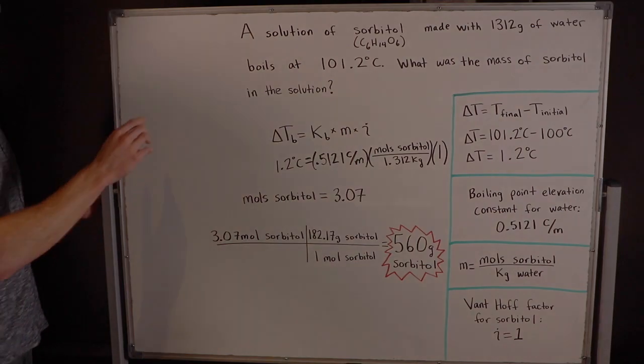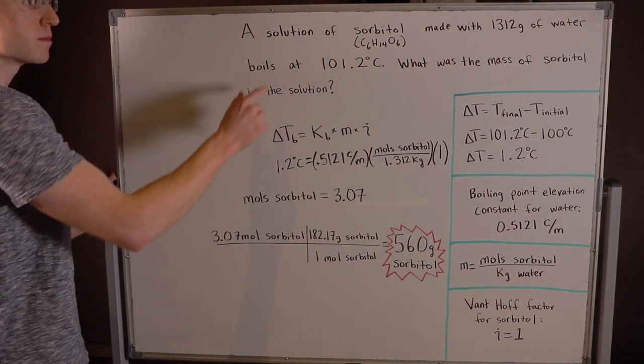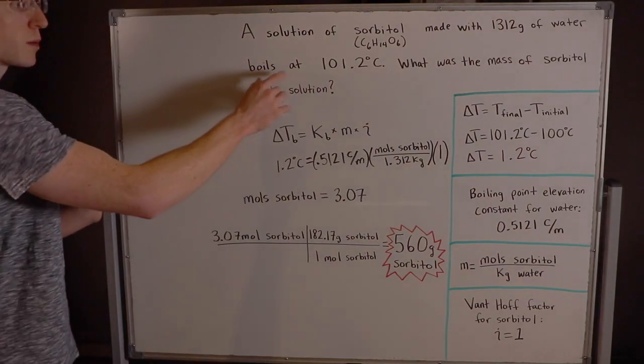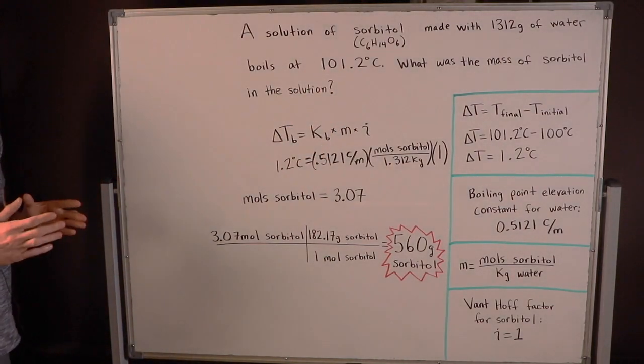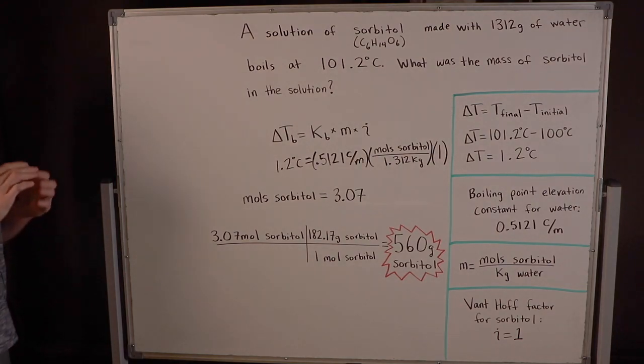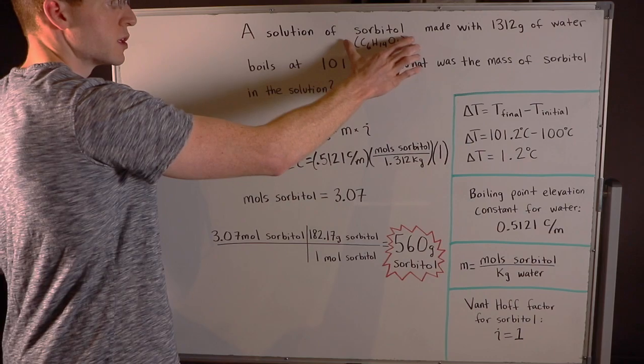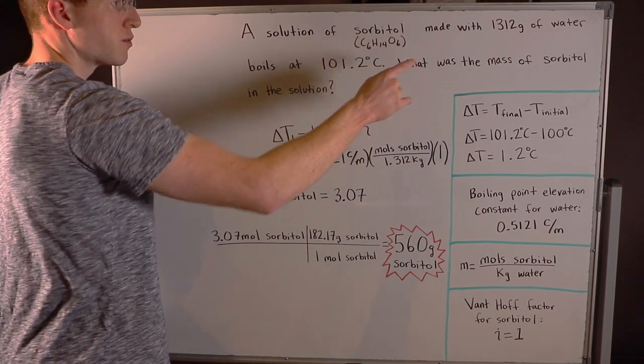Alright, let's do an example problem. A solution of sorbitol made with 1312 grams of water boils at 101.2°C. What was the mass of sorbitol in the solution? So think about what happened here. We dissolved a non-volatile solute, sorbitol, into our solvent, water.